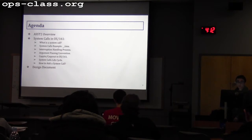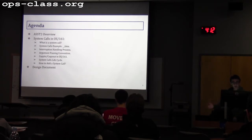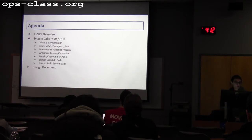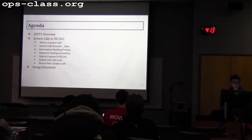What is a system call? We will give an existing system call — the time call — and go through its lifecycle from when it is called to when we receive the return value. We will also explain the interrupt handling process, argument passing, because now we have two spaces — user space and kernel space — and we need to know how to pass arguments from user space to kernel and back. We'll also cover copy-in and copy-out functions, which handle copying values between kernel and user space. Then we'll summarize the system call lifecycle and explain how to add a new system call.